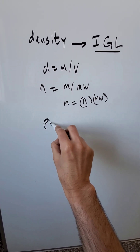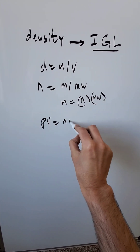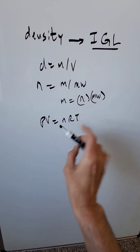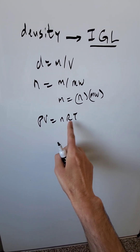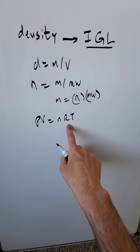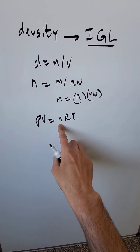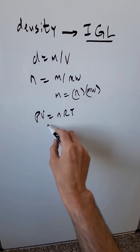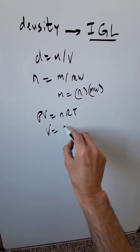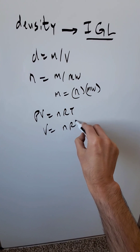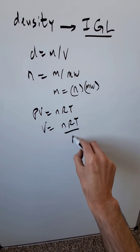The ideal gas law: PV equals nRT — pressure, volume, your ideal gas constant, temperature, and moles. Solving for V: V is equal to nRT divided by P.